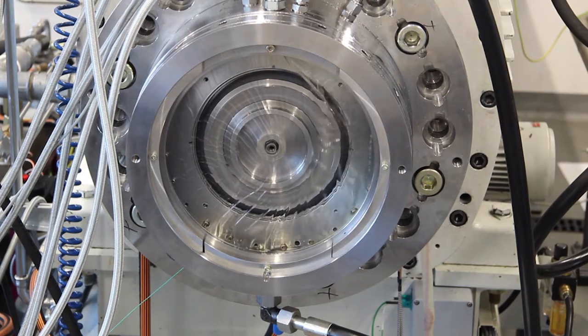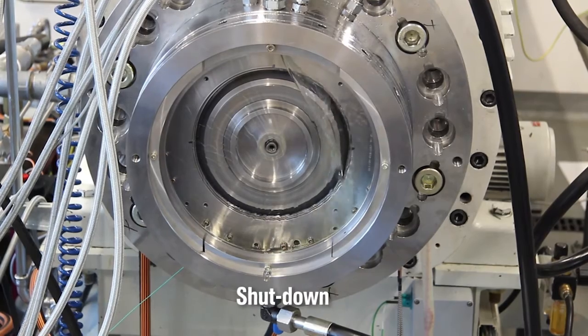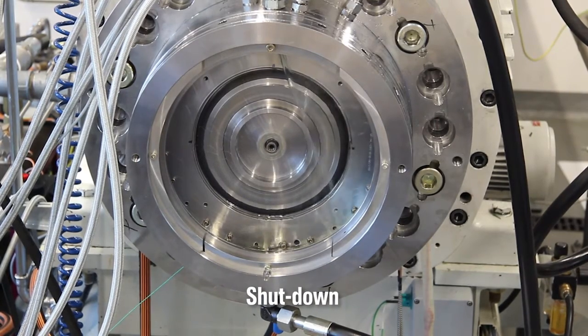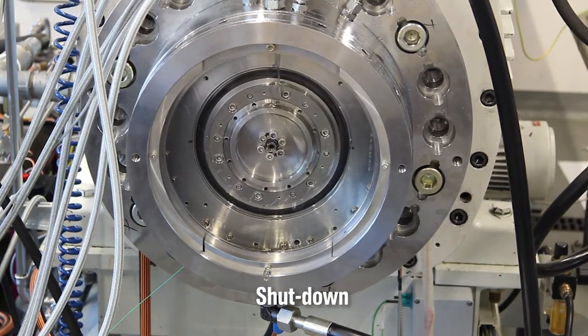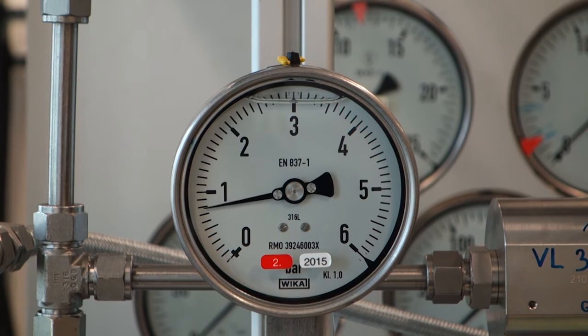As the shaft slows down, the COBA seal remains non-contacting right to the slowest speed range. The test rig is shut down until stationary. In static operation, the COBA seal can be operated unpressurized as demonstrated by the following test sequence.